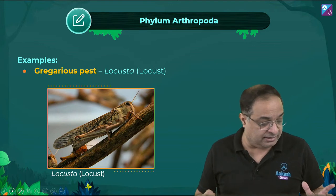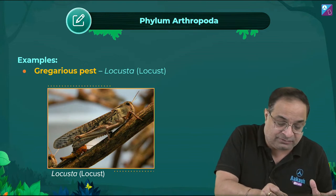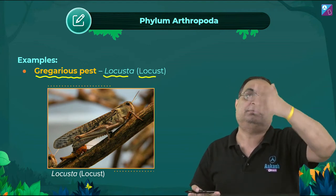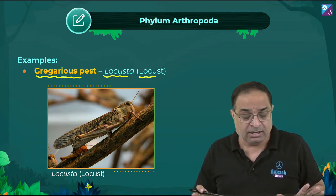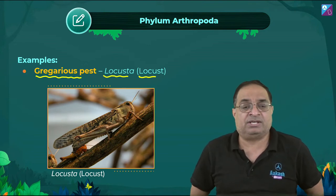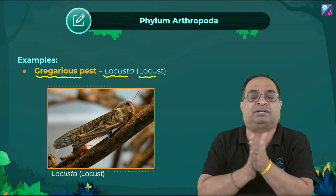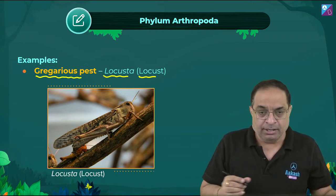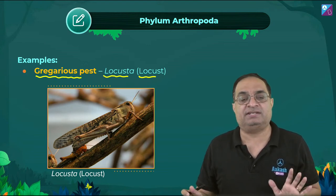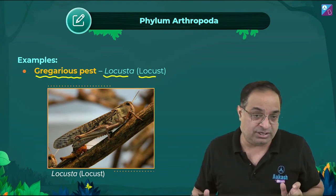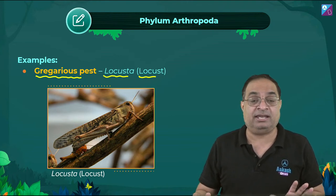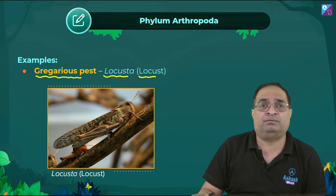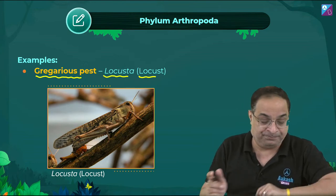NCERT mentions another example — the gregarious pest: locust (Tiddiyaan/Tiddi dal). They move in large swarms and cause huge agricultural damage. Limulus (king crab) is a living fossil. NCERT diagrams include scorpion, prawn, butterfly, and other arthropods — these can be framed as picture-based questions.